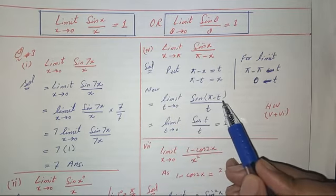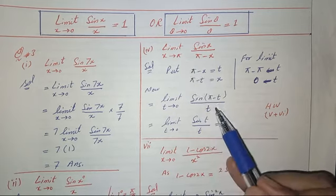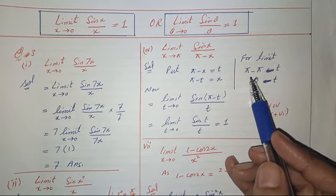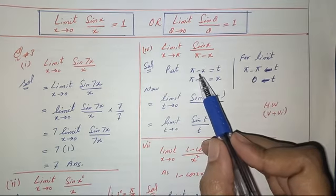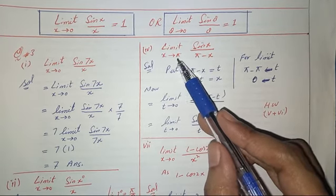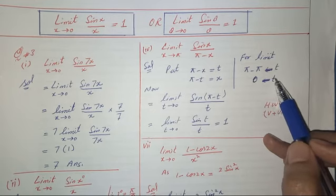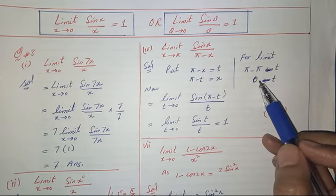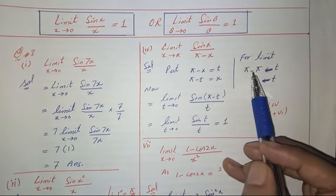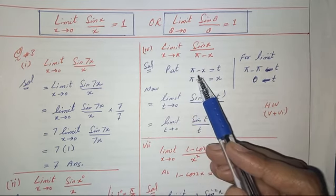After substitution, the expression becomes limit t tends to 0 of sine(pi minus t) over t. The limit changes because when x approaches pi, pi minus x approaches 0, which means t approaches 0. Since sine(pi minus t) equals sine t, the expression becomes limit t tends to 0 of sine t over t, which equals 1.